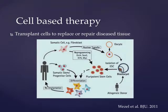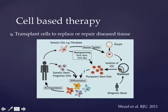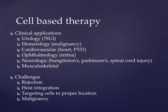Cell-based therapy — basically we're talking about stem cells here for the most part. That's where we transplant cells to replace or repair diseased tissue. The cells can come from yourself, from somebody else, or an embryo. They can be pluripotent, meaning they can differentiate into the three germ layers, or multipotent, meaning they're further down the differentiation line. There's not too many applications in urology at this point, but we know of it in hematological malignancies and stem cell transplants. Challenges include rejection, host integration, targeting cells to the proper place, and of course malignancy — these cells have a chance to turn into anything, especially when pluripotent. Teratomas are known to form from those particular cells.